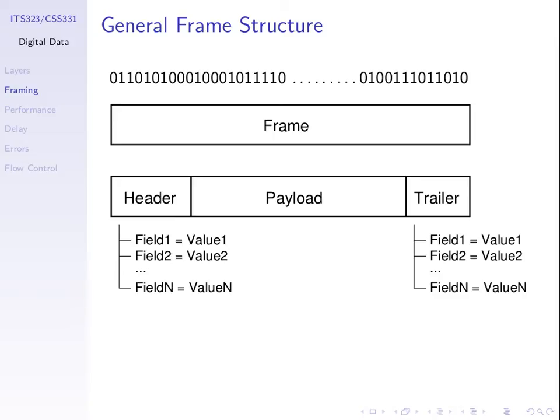The header is broken into a set of fields and each field has some values. The exact structure of a particular frame depends upon the standard. Wi-Fi for wireless LAN uses one particular standard, wired LAN uses something different, and your ADSL home connection uses something different again. So there are different frames for different technologies, but they all follow this general structure of having header, payload, and trailer, although not all three are necessary.